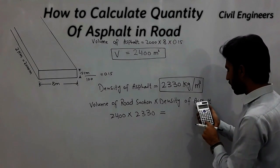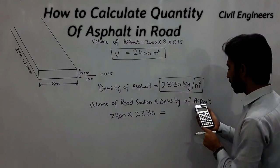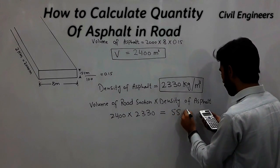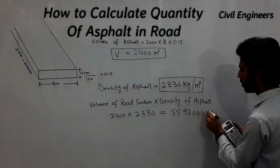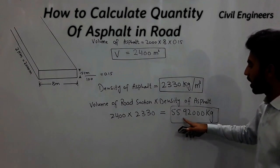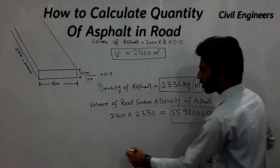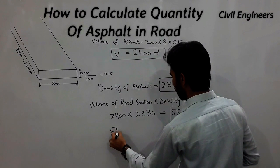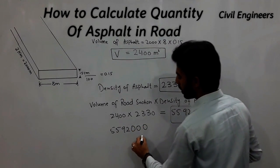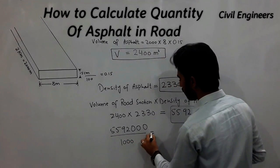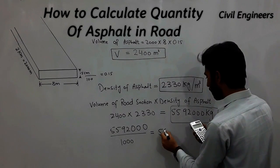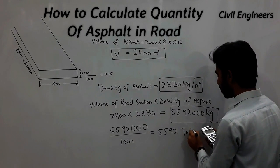2400 multiplied by 2330 gives us 5,592,000 kg in this road. To convert to metric tons, we divide by 1000, which gives us 5592 tons. That is the quantity of asphalt for this road.